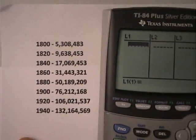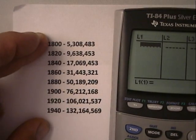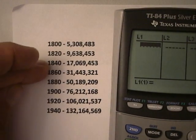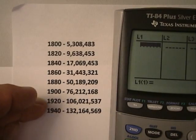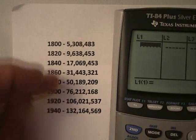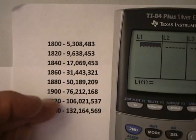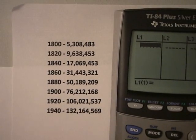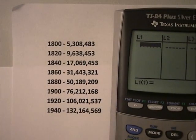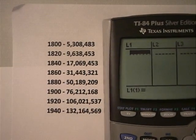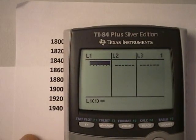We're also going to enter the data in starting from the year 1800 in increments of 20 years. And we're going to enter in the population in millions. We have 5.3 for example and so on.